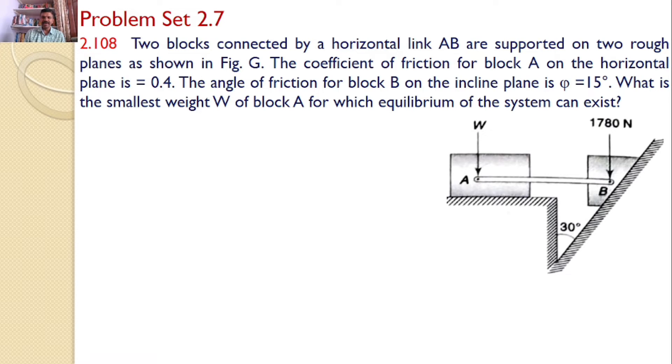Two blocks connected by a horizontal link AB are supported on two rough planes as shown in the figure. The coefficient of friction for block A on the horizontal plane is 0.4. The angle of friction for block B on the inclined plane phi is equal to 15 degrees. What is the smallest weight W of block A for which equilibrium of the system can exist?